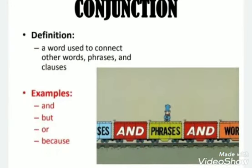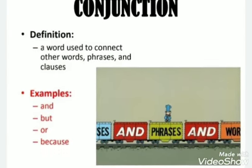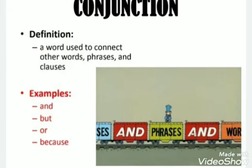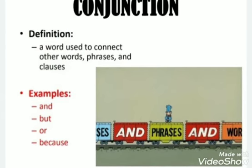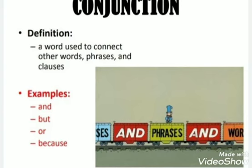Conjunction — a word used to connect other words, phrases, and clauses. Examples: and, but, or, because, etc. It conjoins two words.